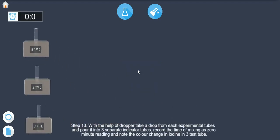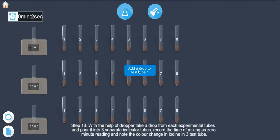Step 13: With the help of dropper, take a drop from each experimental tube and pour it into 3 separate indicator tubes. Record the time of mixing as 0 minute reading and note the color change in iodine in 3 test tubes.